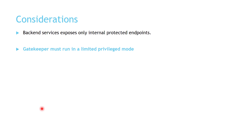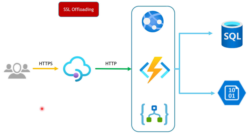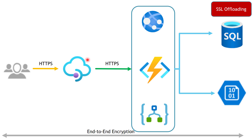The backend services should accept traffic only from the API management, and the API management should accept traffic only from the Application Gateway. Another consideration is applying the minimum security privilege principle to your gatekeeper, and you should not implement any business logic in the gatekeeper itself. Regarding SSL offloading — this means encrypted communication between external clients and the API management, with SSL offloading done at the API management to continue internal traffic over HTTP only, improving internal system performance. However, if you require end-to-end encryption, SSL offloading should be done at the database layer, keeping all traffic encrypted with HTTPS.